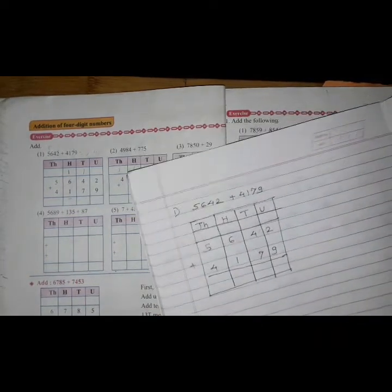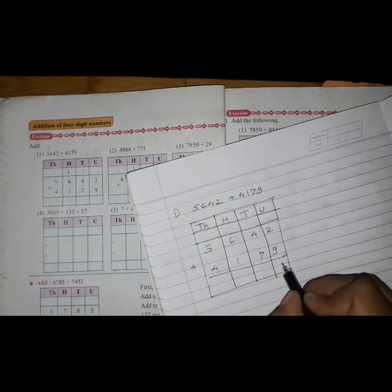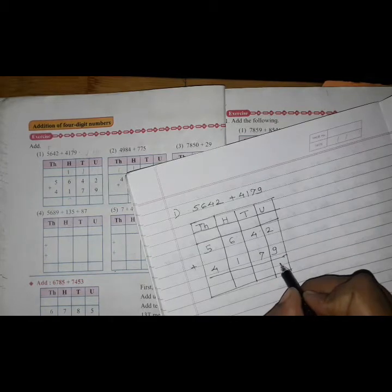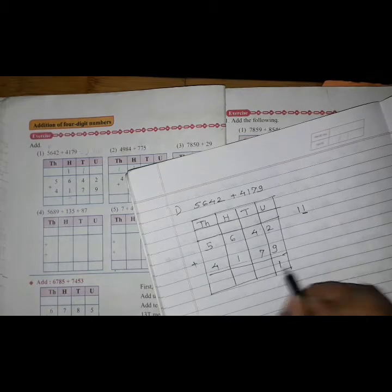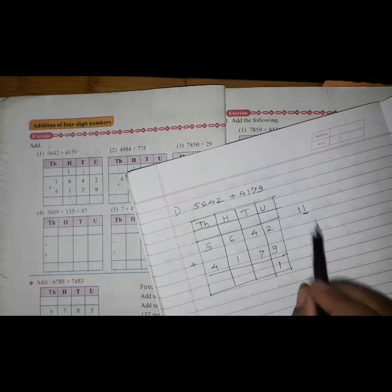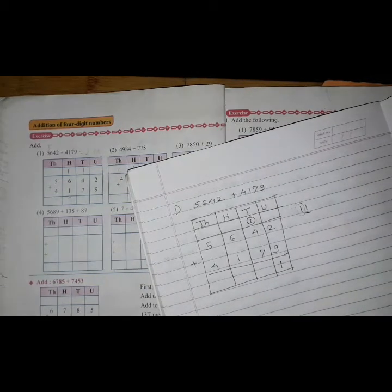9 plus 2 is 9, 10, 11. So we will write 1 at the units place and this 1 will go here as a carry.